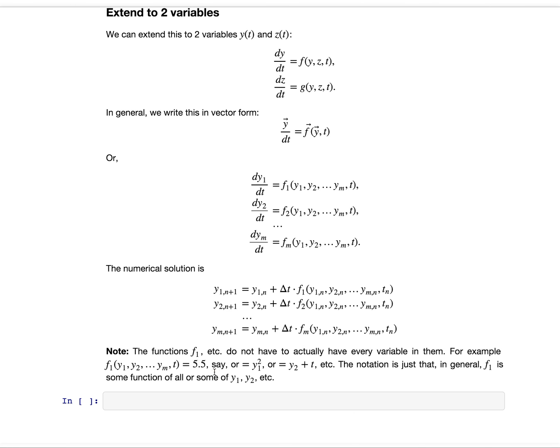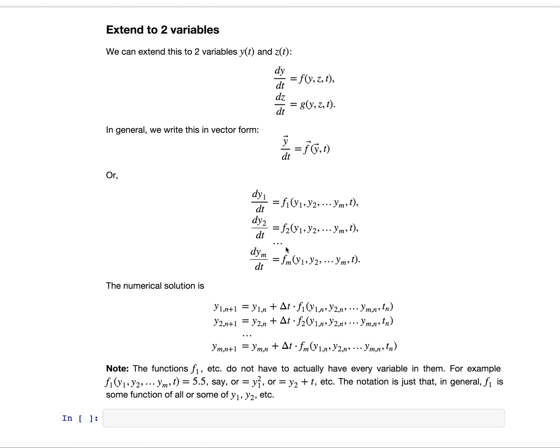Now note that the functions, f1, etc., don't have to actually have every variable in them. For example, f1 of y1, y2, y3, etc., could just be 5.5 or it could equal y1 squared or it could equal y2 plus t, etc. The notation is just that in general f1 is some function of all or some of the variables and time. This should help when trying to write the specific set of equations in the form that we're interested in for solution.